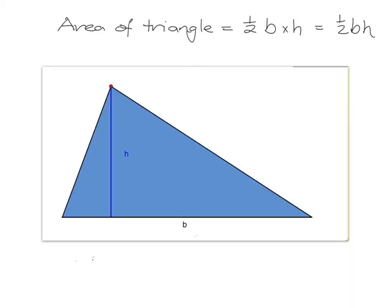The area of a triangle is half base times height, which we can write as ½bh in maths — leaving out the sign means multiplication, so ½bh means half base times height. The base is the bottom of the triangle, and the height is from the corner opposite the base, down directly at 90 degrees to the base.